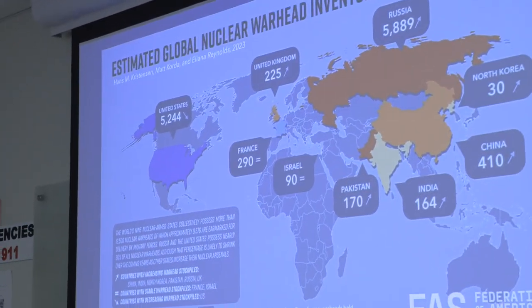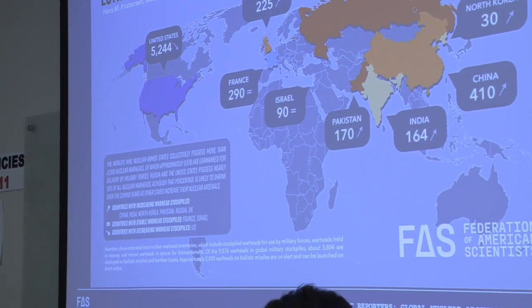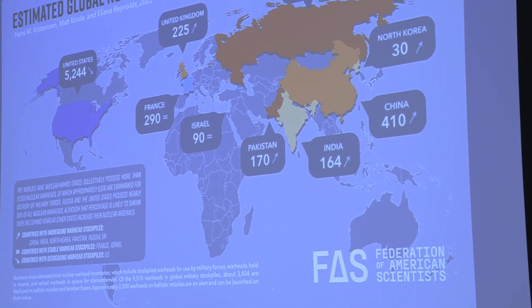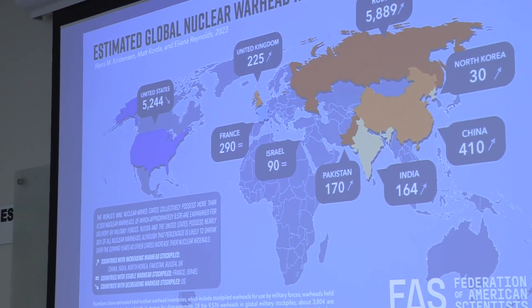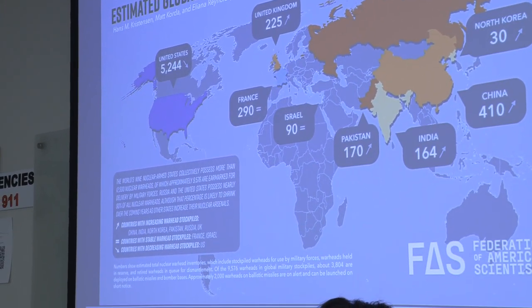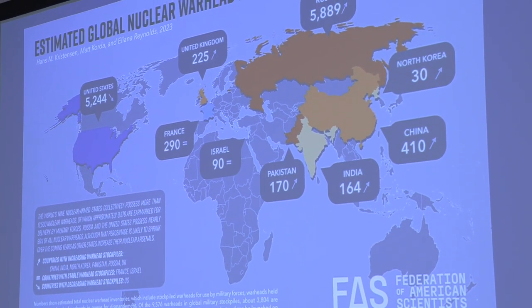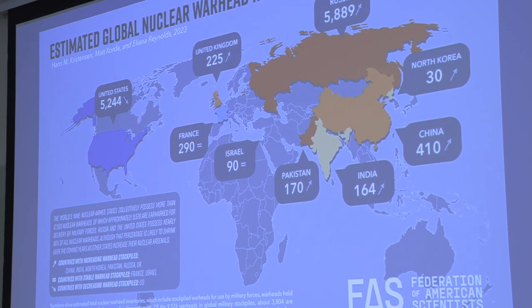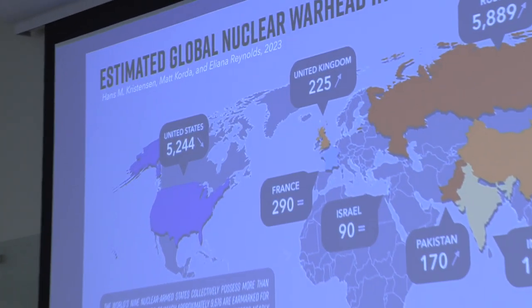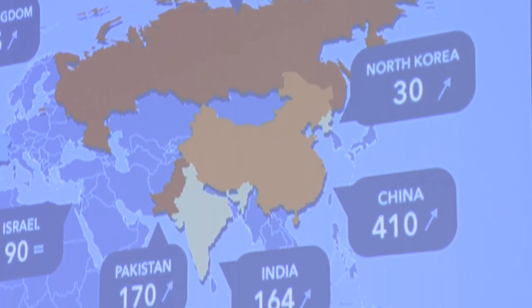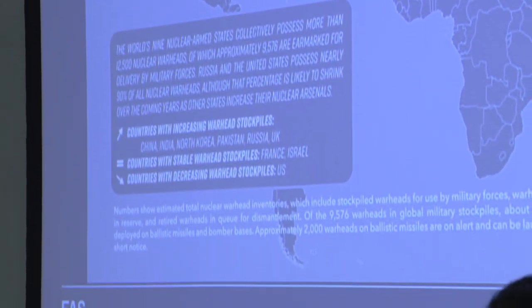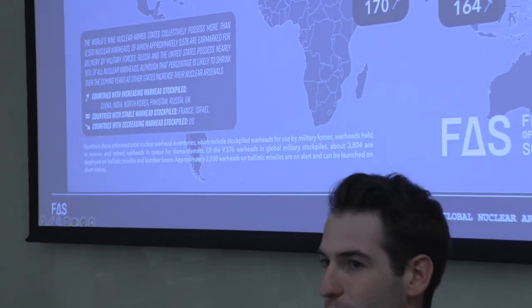We put a lot of work into it, and this type of work is getting a lot more important. As tensions between nuclear-armed countries are on the rise, nuclear opacity is also on the rise, and countries are becoming a lot less transparent about their nuclear forces. That requires us and other organizations to use what we refer to as open sources to conduct our investigations — essentially investigative journalism on an extremely targeted scale using very specific methods.